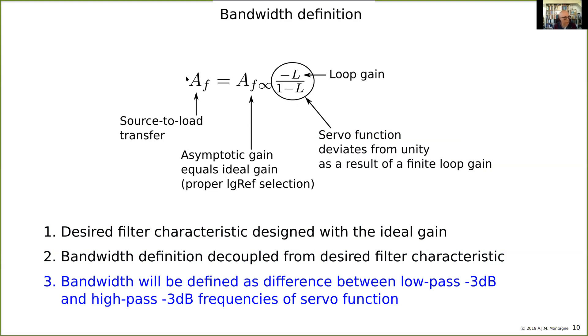But the deviation from unity tells us something also about the bandwidth. If there's, for example, a high-frequency -3dB point, then that is the high-frequency cutoff, and if there is a low-frequency -3dB point, then there is a low-frequency cutoff.